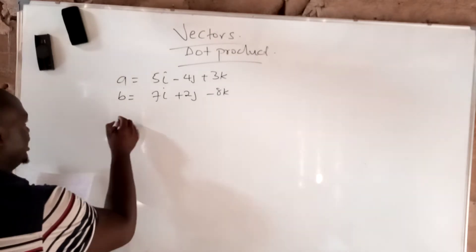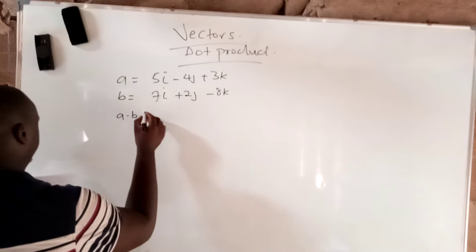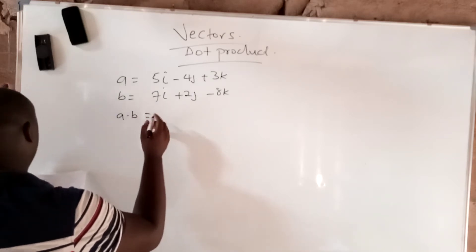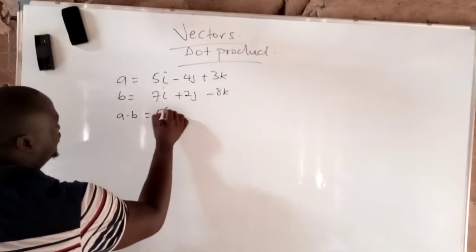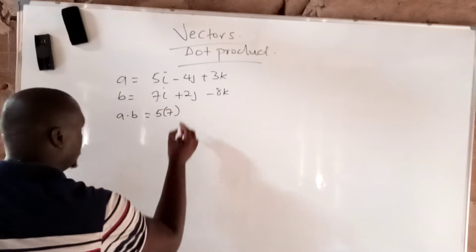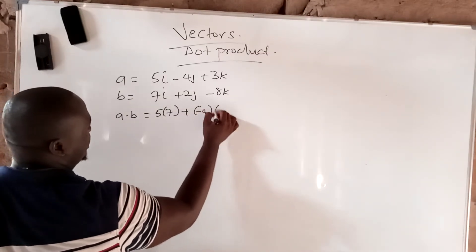A dot b, that is dot product, is equal to 5 times 7 plus minus 4 times 2.